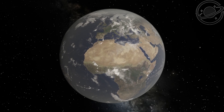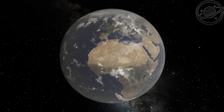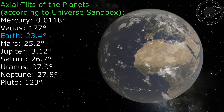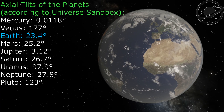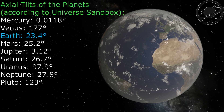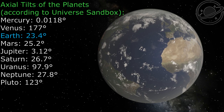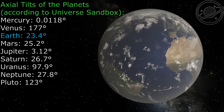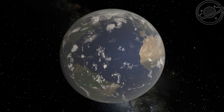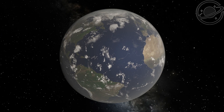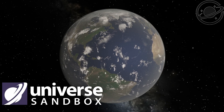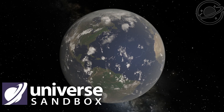Hello everyone! In this video, planet Earth will have different axial tilts, just like the other planets in the solar system. I will sequentially set Earth's axial tilt to match that of Mercury, Venus, Mars and so on. You'll see how Earth's appearance and climate will change as a result. All of this will be demonstrated using the Universe Sandbox Simulator. Let's get started!